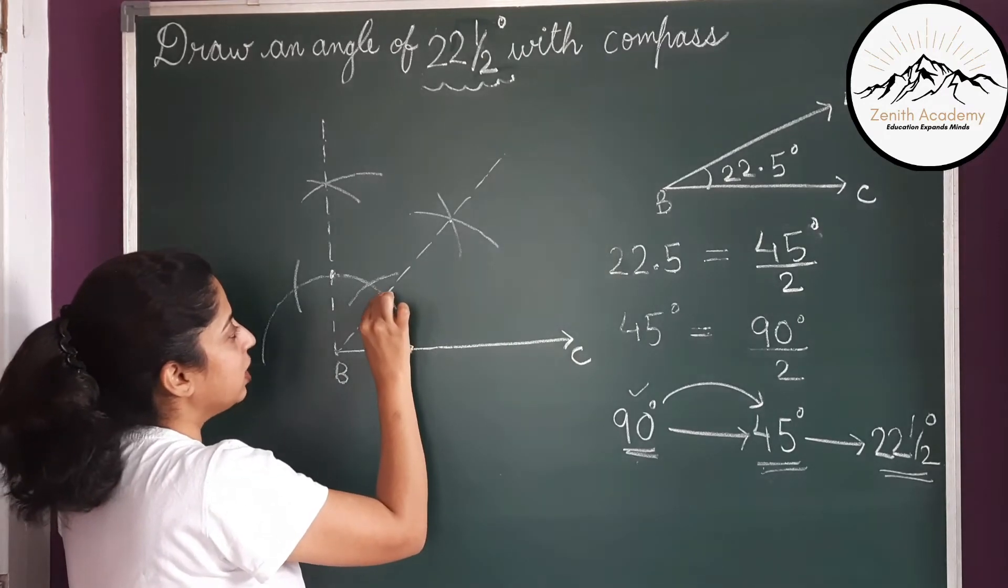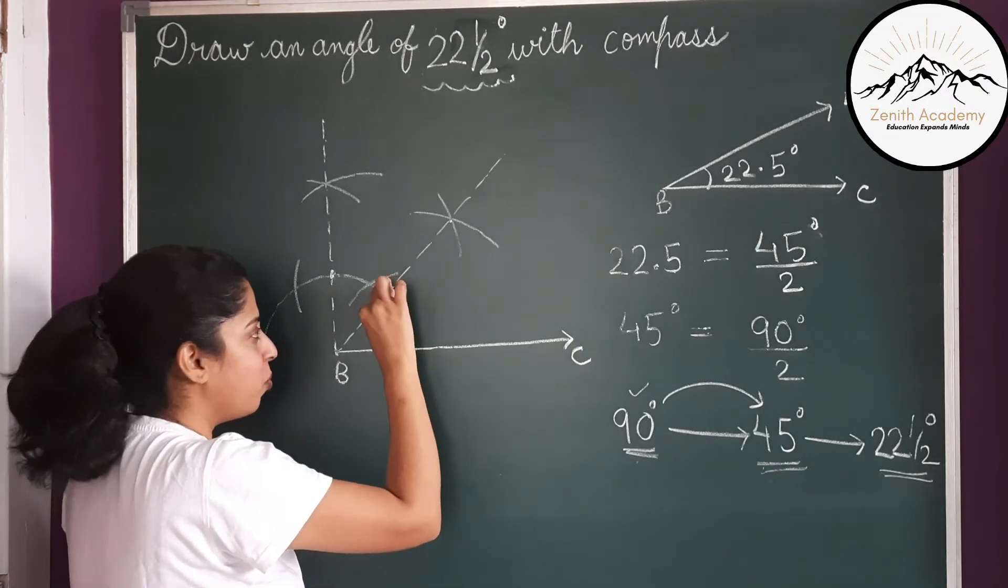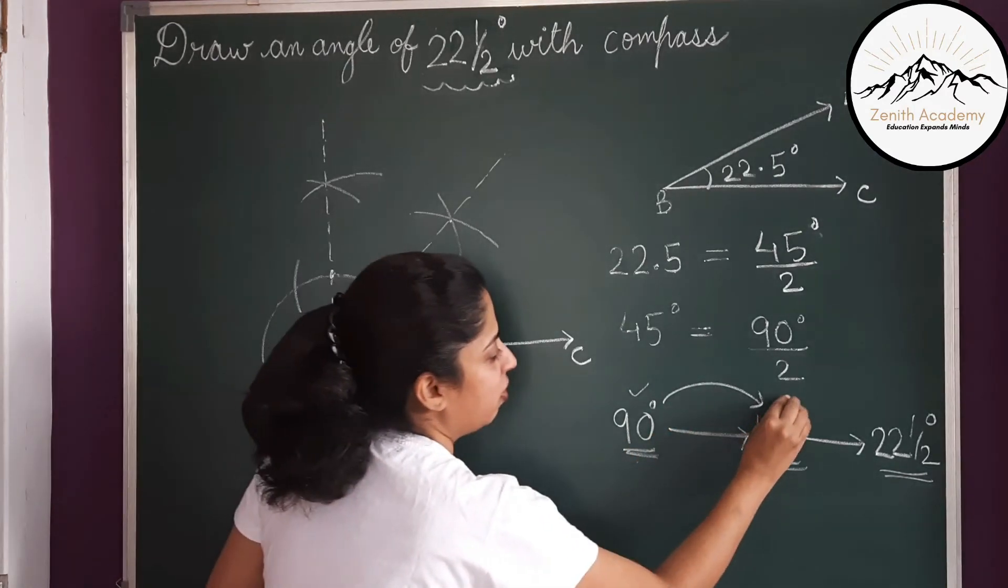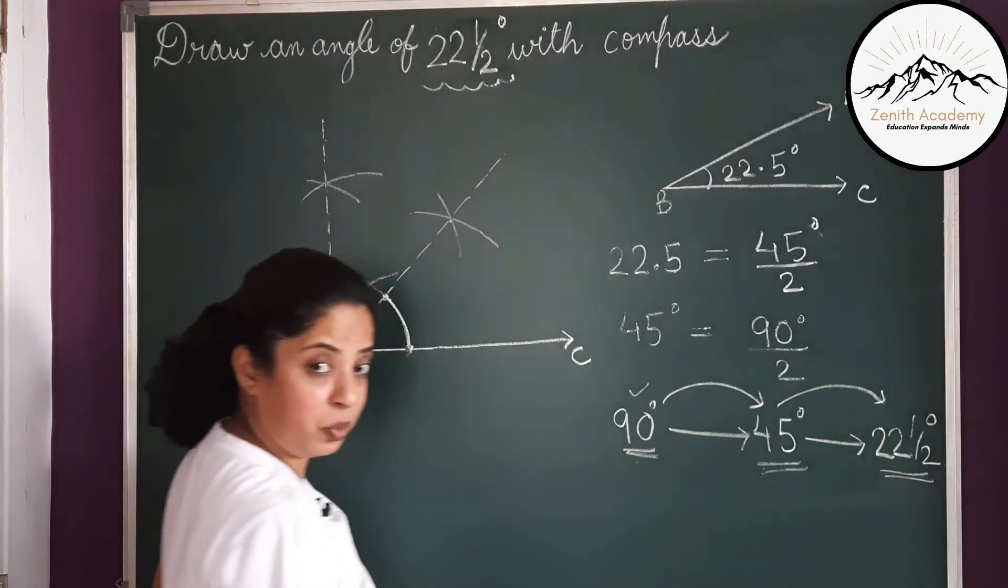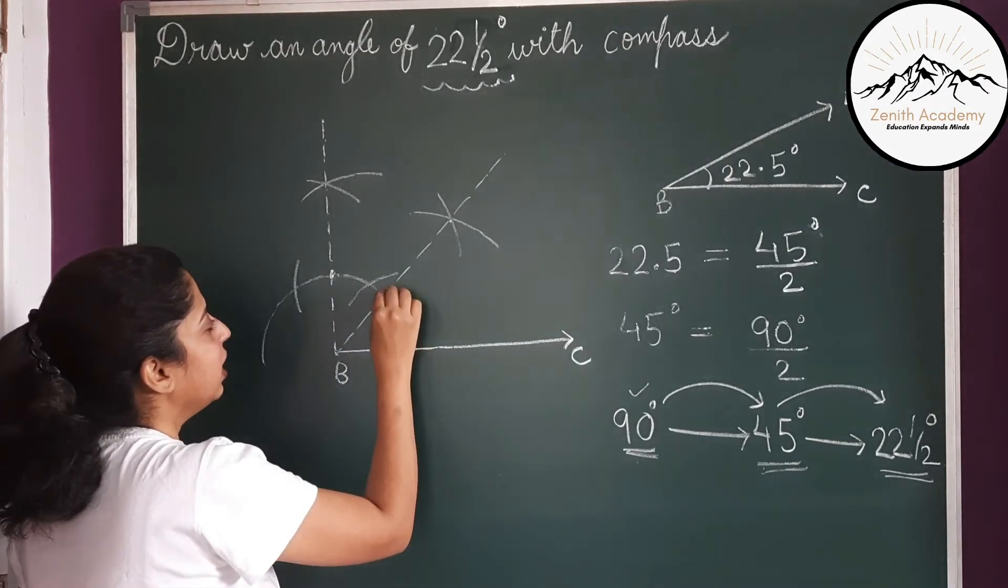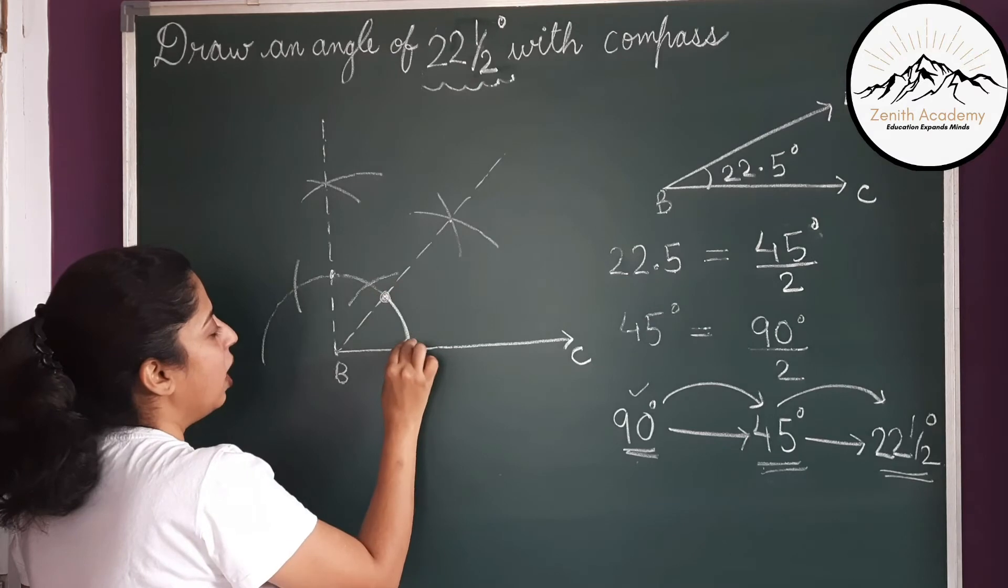So we will take this point and this point. Now we have to bisect this angle, 45 degree. So if we bisect 45, we will get 22 and a half. So let us bisect this part now. So we will take this point and this point.